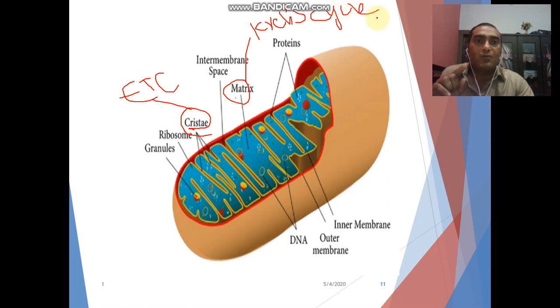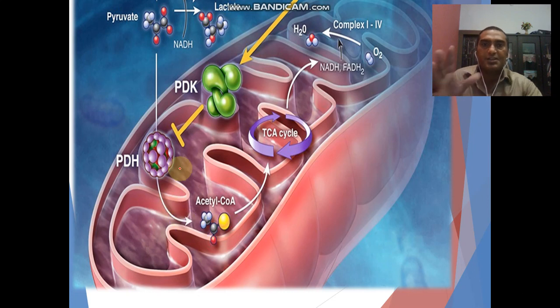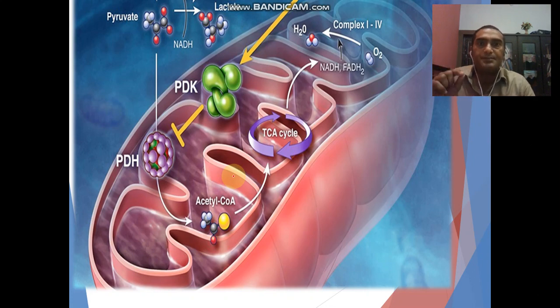So mitochondria almost presence in all type of eukaryotic organism and this is particularly for the respiration, this is cellular inner respiration you can say. This is another structure, tubular structure you can see here, and we will discuss this one in detail.